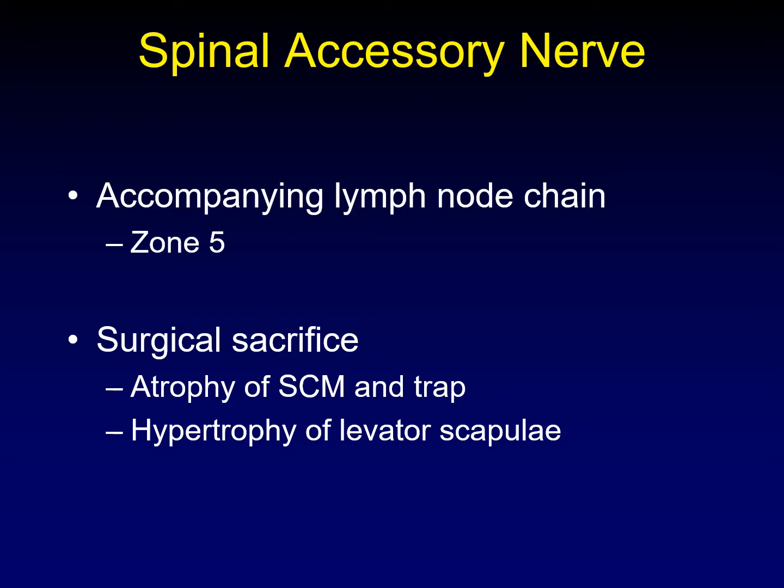The spinal accessory nerve runs obliquely across the posterior triangle of the neck. It has an accompanying lymph node chain, mostly zone 5 of the neck, level 5 nodes. The spinal accessory nerve usually comes into our discussions when it has been surgically sacrificed — it is part of a radical neck dissection to remove the spinal accessory nerve.